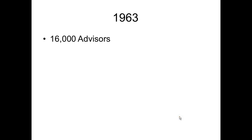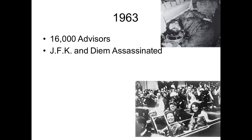By 1963 there were now 16,000 advisors in Vietnam. Advisors were not listed as combat troops, so we could send as many as we wanted. Diem was becoming more and more of an embarrassment to the US. His own generals wanted to assassinate him, including his brother. We knew this was going to happen and chose to do nothing to prevent it, and Diem was assassinated.